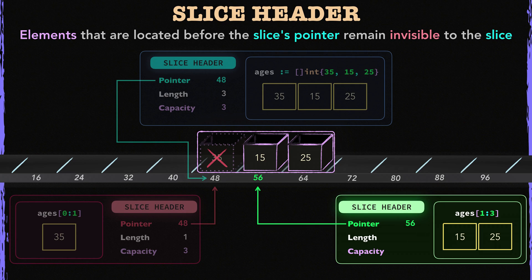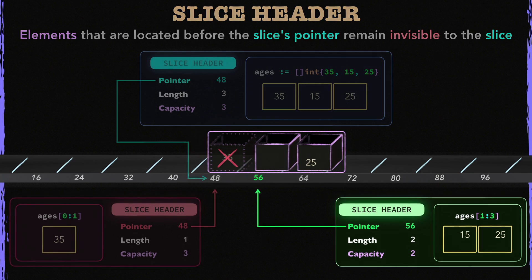Here the green slice's length field is 2, because it has only 2 elements. Although there are 3 elements in the backing array, but for the green slice, there are 2 elements in the array. So the green slice's capacity is 2. It is because the green slice cannot look back. It doesn't know about the array's first element.